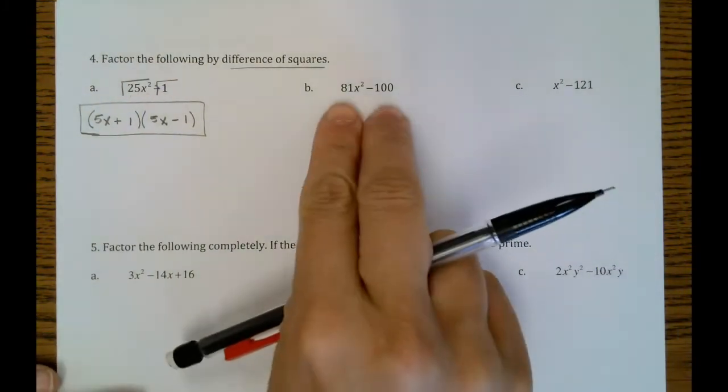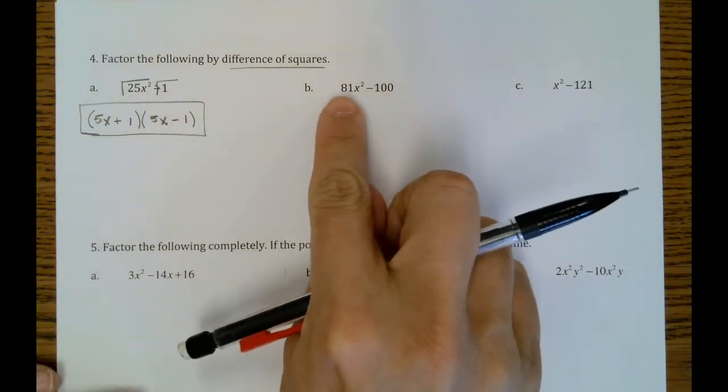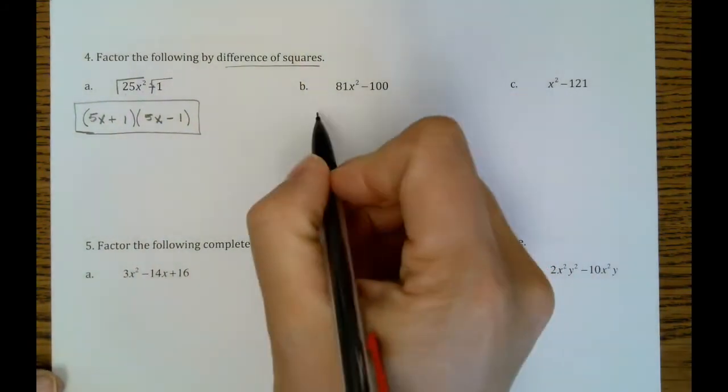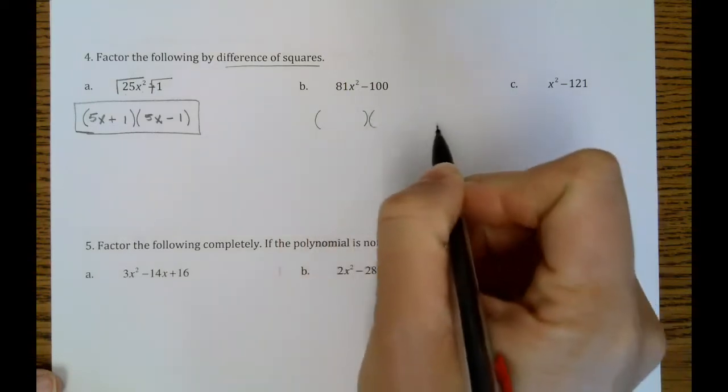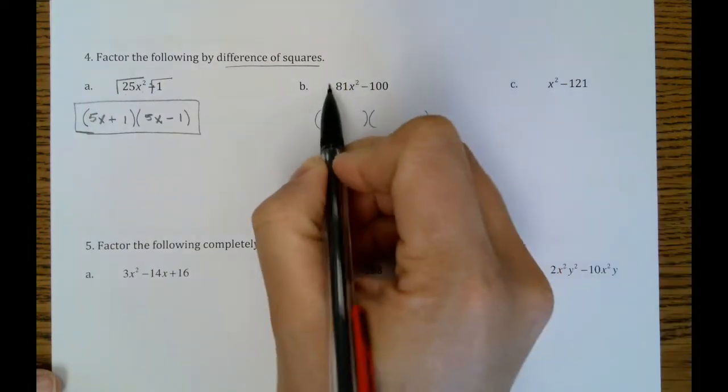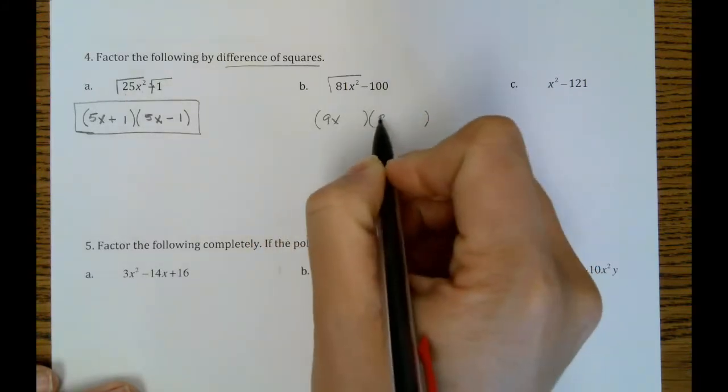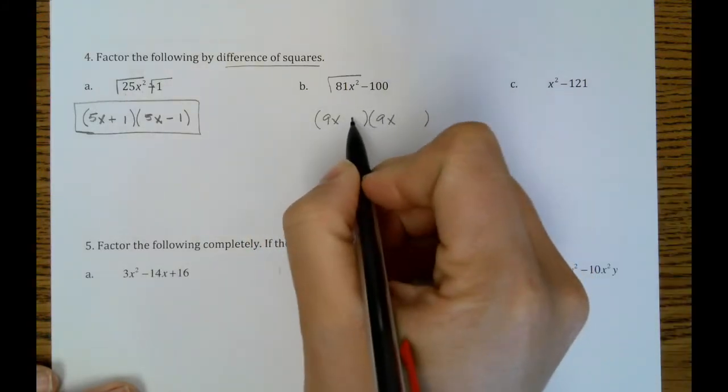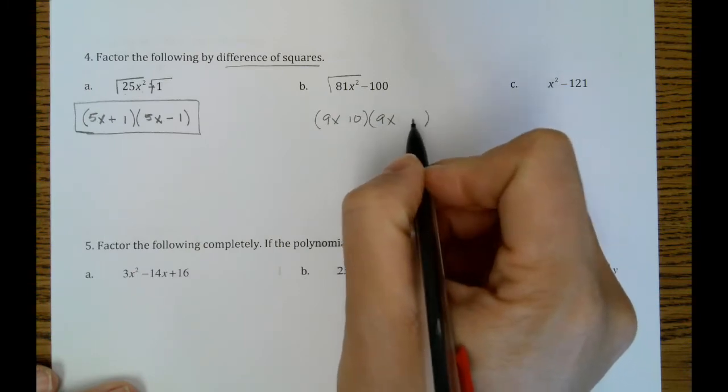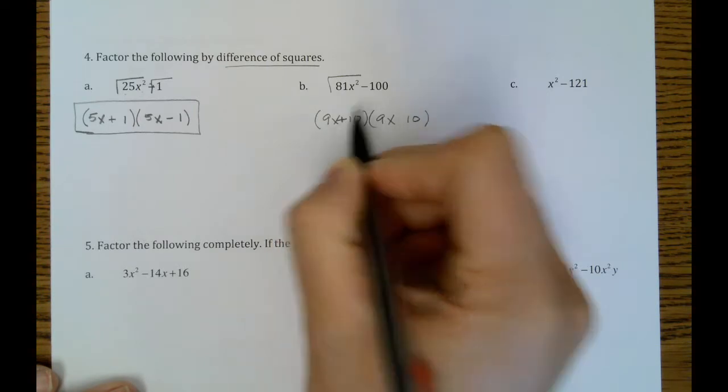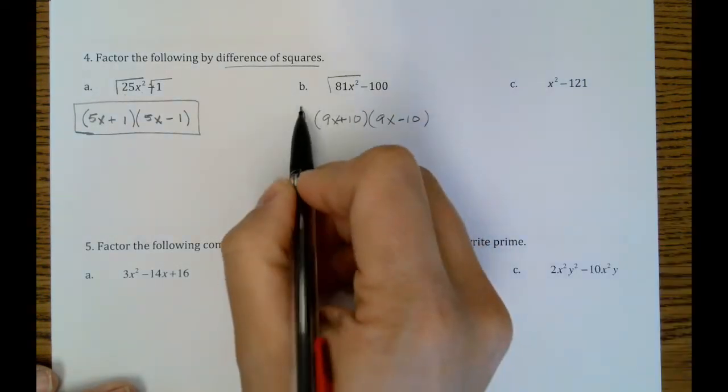Okay, letter B, same thing, two terms, negative 81 and 100 are both perfect squares. So we can draw our two parentheses. The square root of 81x squared is 9x. The square root of 100 is 10. We'll have one with an addition sign and one with a subtraction sign.